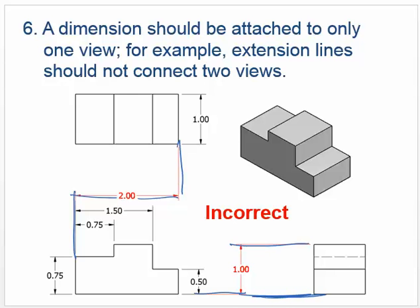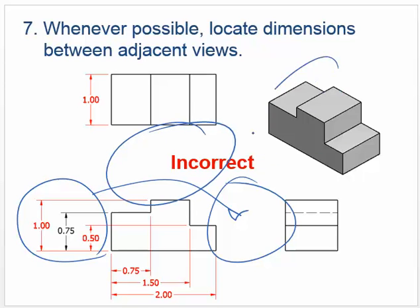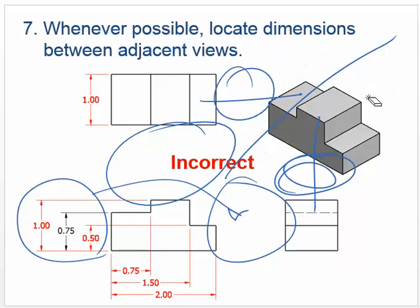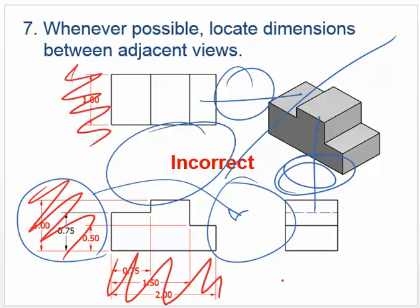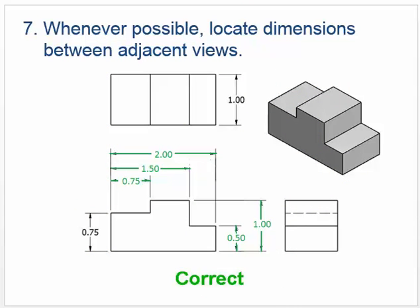Rule number seven: whenever possible, locate dimensions between adjacent views. What you're seeing here is all these dimensions off to the left side, and what they'd like is to see as many of those dimensions brought in between the views. They'd like to see dimensions in those in-between areas, not off to the far outside. That doesn't mean you can never have any outside — it says whenever possible. This is the correct way that this one should be dimensioned.